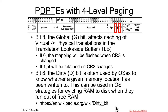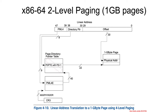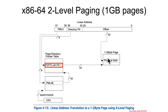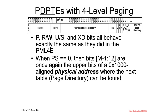Intel was actually trying to give us a hint here. When we had the one gigabyte version, it said PDPTE with PS equals one — meaning 30 bits are used to index into a 2-to-the-30, one gigabyte page. If, on the other hand, the PS bit is equal to zero, then the entry is interpreted differently.